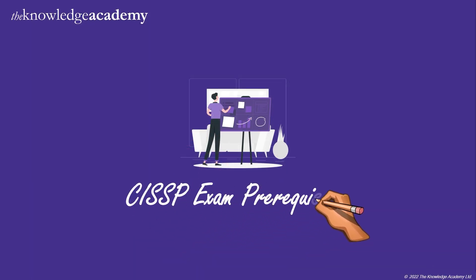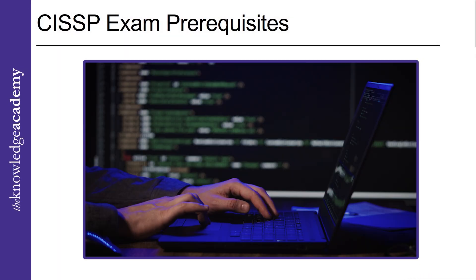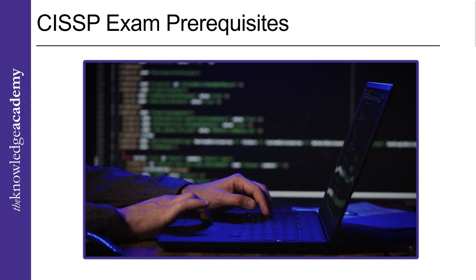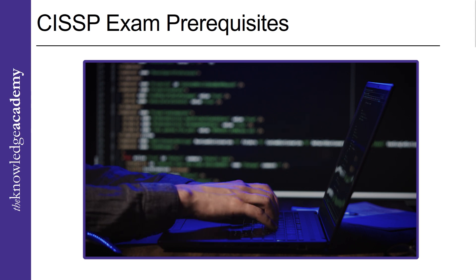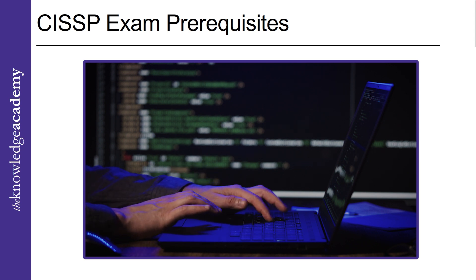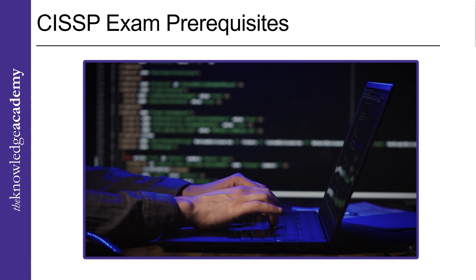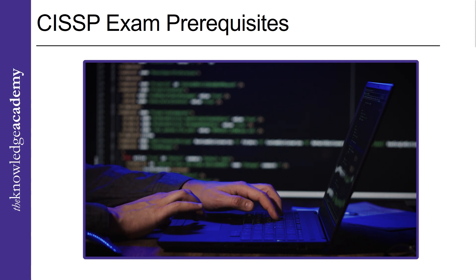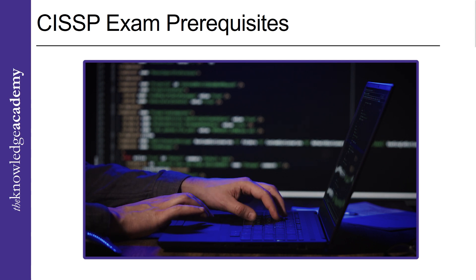To take the CISSP exam, a candidate must provide proof of at least five years of work experience in information security. Your CBK experience must cover at least two of the eight ISC² CISSP security domains.